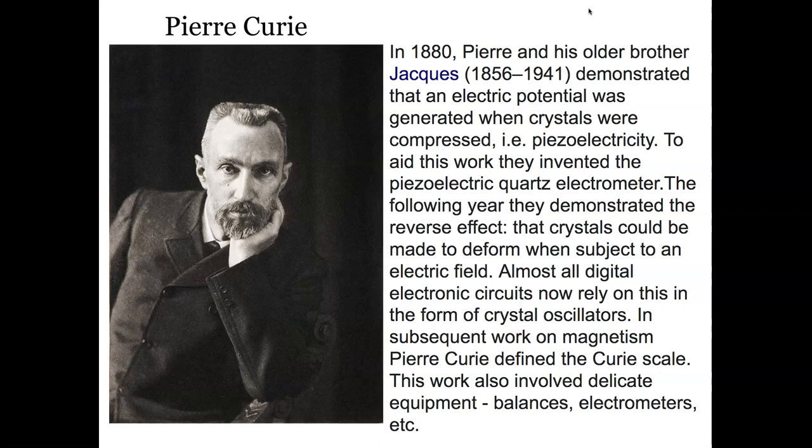Pierre Curie came up with an electrometer that could measure small changes of electrical input, which was really important in measuring radioactivity. He shared a Nobel Prize in 1903 with his wife and Henri Becquerel, defining that compounds give off certain types of energy naturally. Remember, the x-ray required turning on an electrode. This was a scenario where atoms by themselves were giving off x-ray-like radiation on their own without turning anything on — and they discovered that.